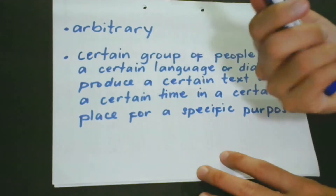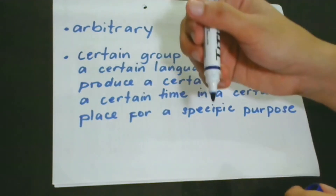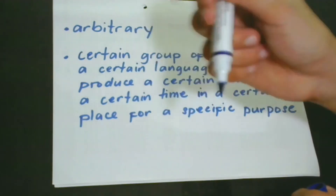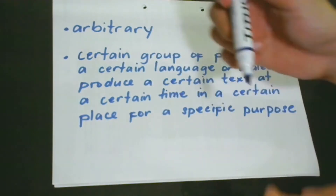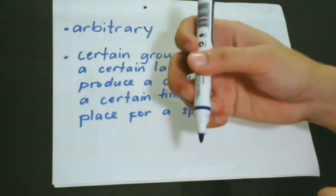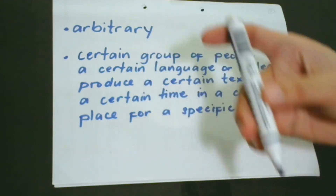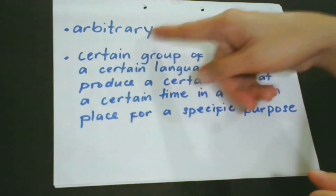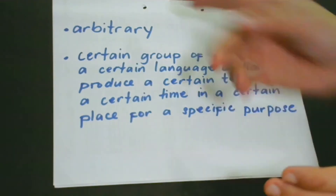For example, let's consider this marker. You may be wondering why we call this a marker and not a pencil or bond paper. It's because this is arbitrary — a certain group of people sometime in the past decided to call this a marker, a board marker. That is arbitrariness of a language.